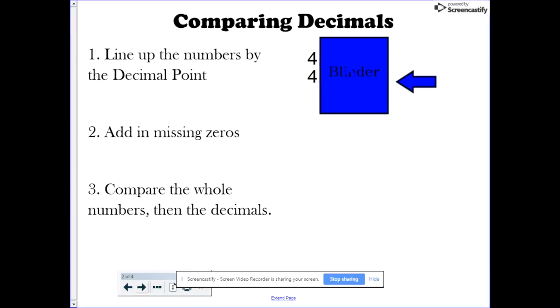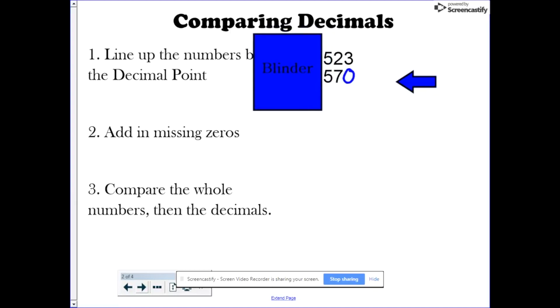Third, you compare the whole numbers to see if one's bigger than the other. In this case, they're both fours. However, if they were different numbers, you could stop there. After you've compared the whole numbers, you then compare the decimals.